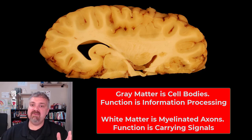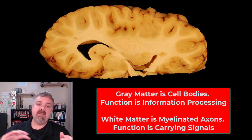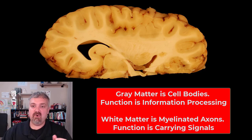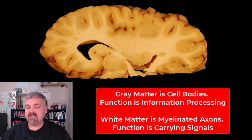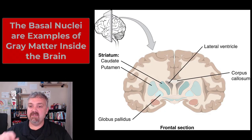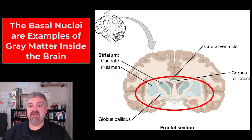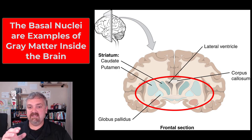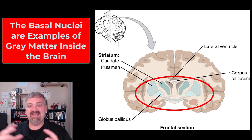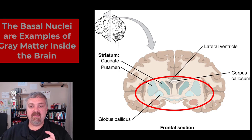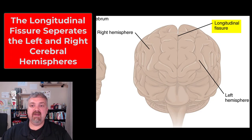Grey matter is located in two places. We primarily think of it in the cerebral cortex on the outside, but it's also located inside the brain in an area called the basal nuclei. There is grey matter there too — for example, the caudate and the putamen are examples of grey matter inside the brain.